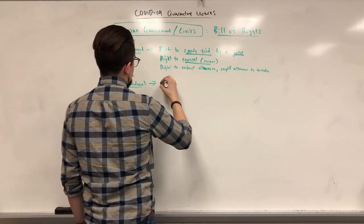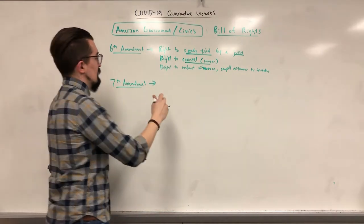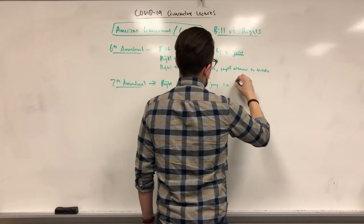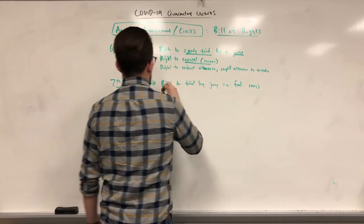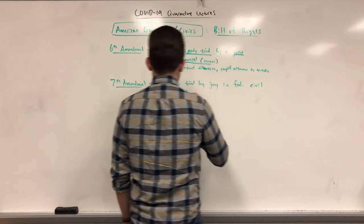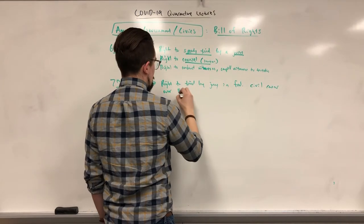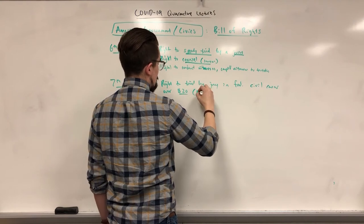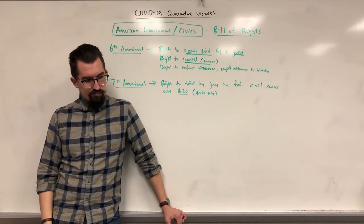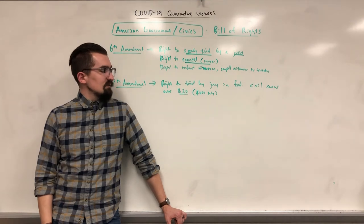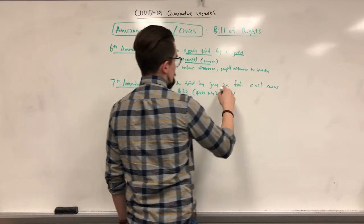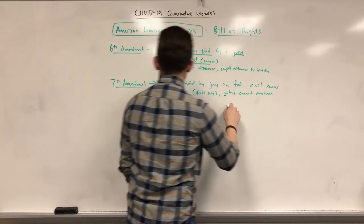The Seventh Amendment is a protection specifically in civil cases. It guarantees you the right to a trial by jury in federal civil cases over twenty dollars — which in today's money is roughly around six hundred dollars due to inflation since this was written around 1788. A judge also cannot overturn a jury's decision that is based on fact.